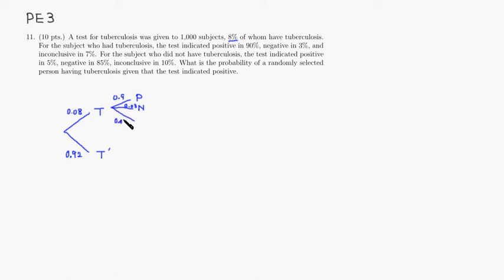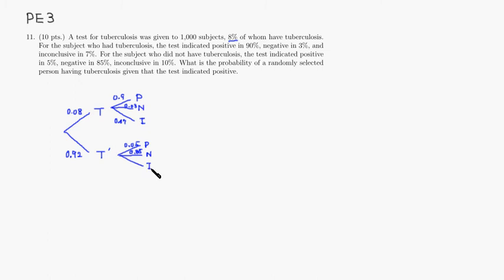Inconclusive is 7%, so 0.07. For people who did not have tuberculosis, they test positive 5% of the time — so positive is 0.05. Negative is 85% of the time, so 0.85. Inconclusive is 10% of the time, 0.1. This is a tree table.